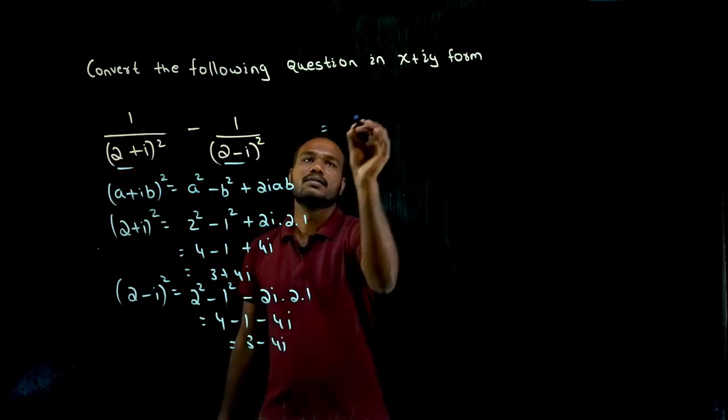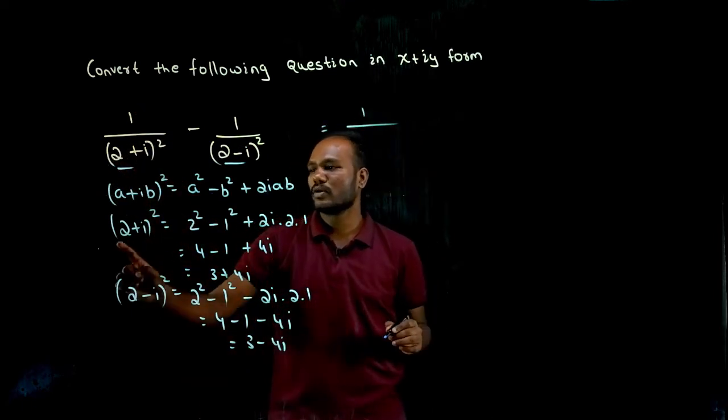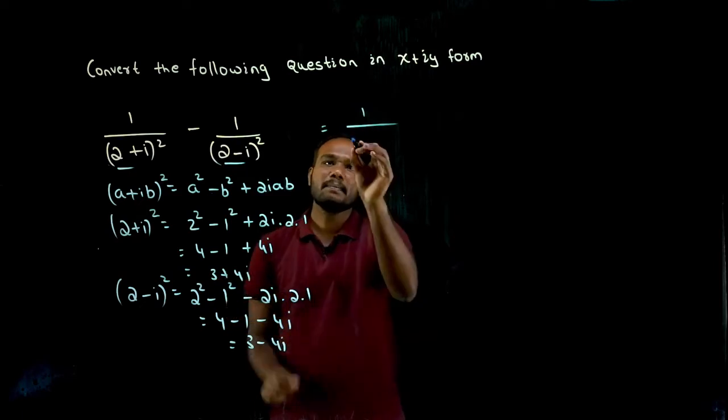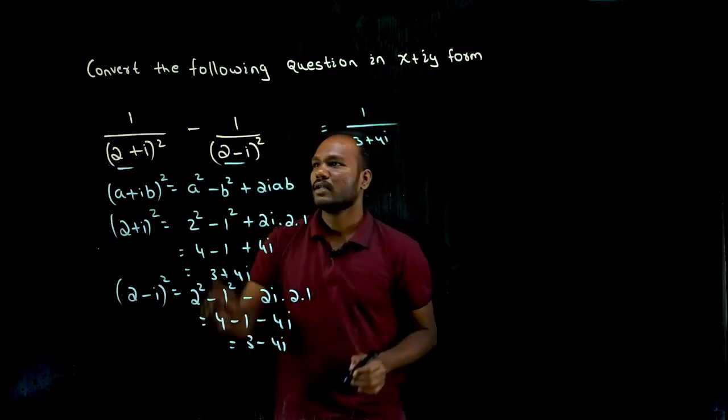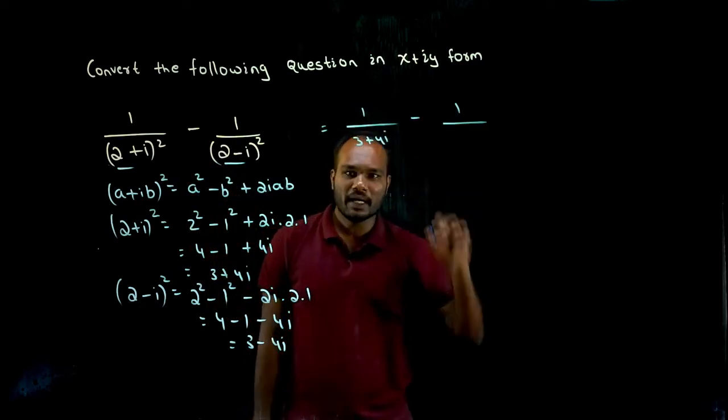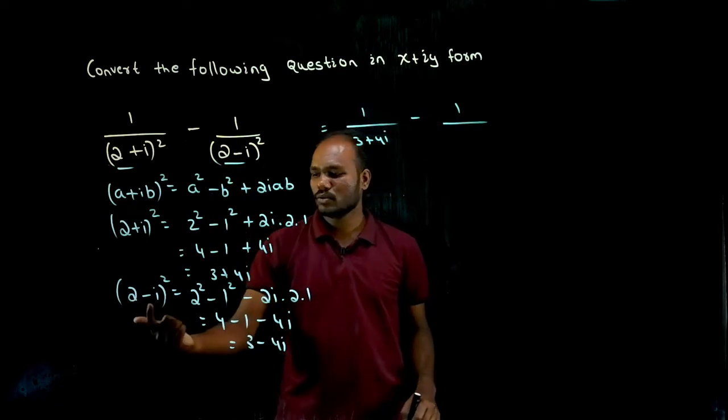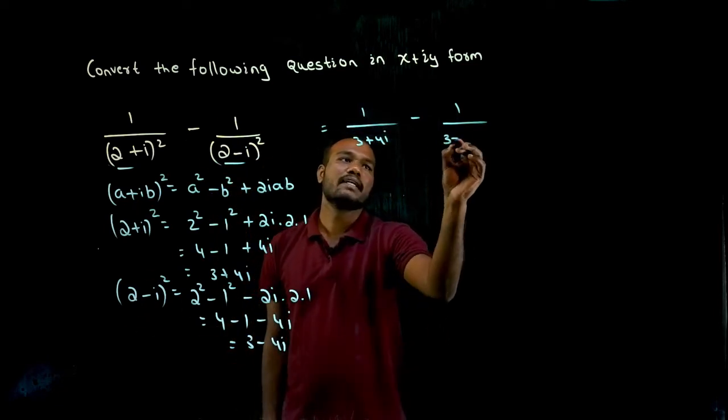So 1 by 2 plus i whole square - 2 plus i whole square is what? 3 plus 4i. And minus 1 by 2 minus i whole square - 2 minus i whole square is what? 3 minus 4i.